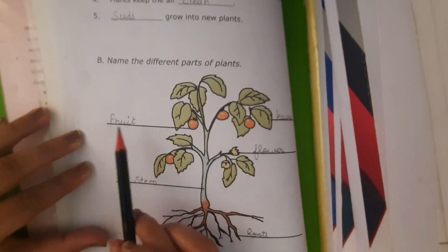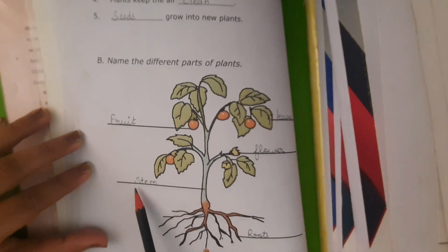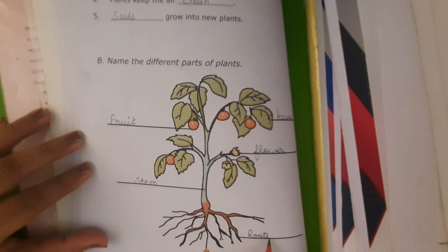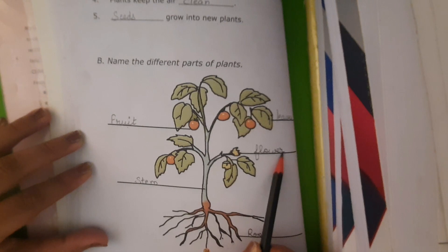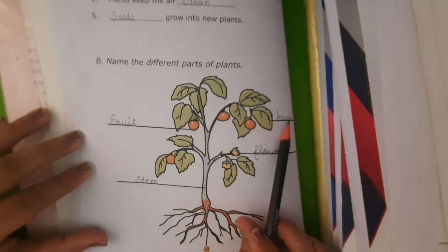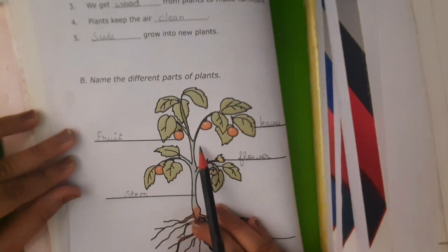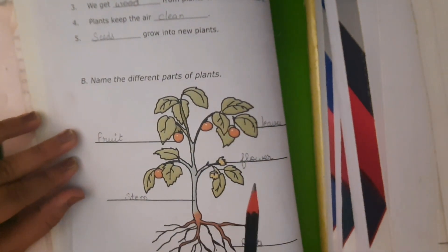Fruit, F-R-U-I-T. Stem, S-T-E-M. Roots, R-O-O-T-S. Flower, F-L-O-W-E-R. Leaves, L-E-A-V-E-S. So these are different parts of a plant.